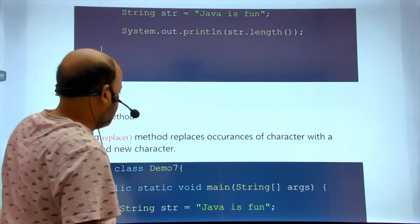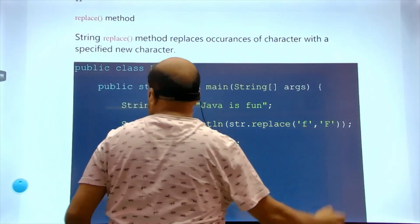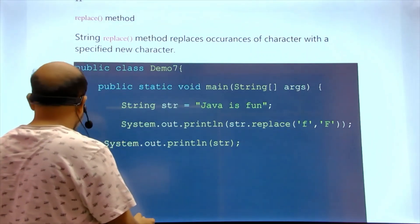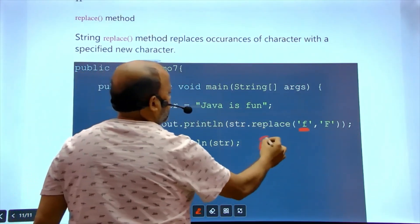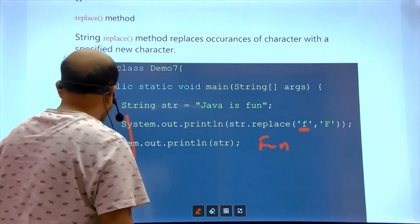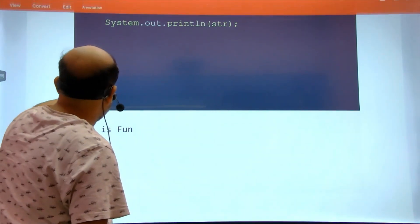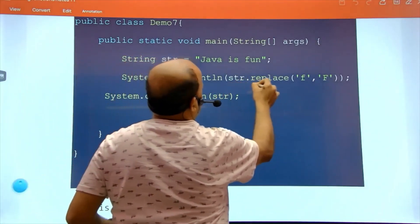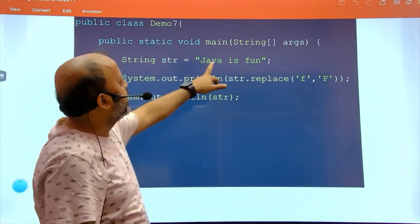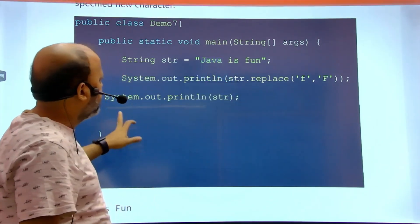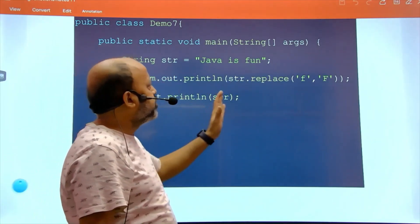The replace() function replaces one character with another. For example, with 'java is fun', converting lowercase letters to uppercase: str.replace() gives the output 'JAVA IS FUN'. Note that if you just print the result without reassigning, the original string is unchanged. To change it permanently, you must write str = str.replace().